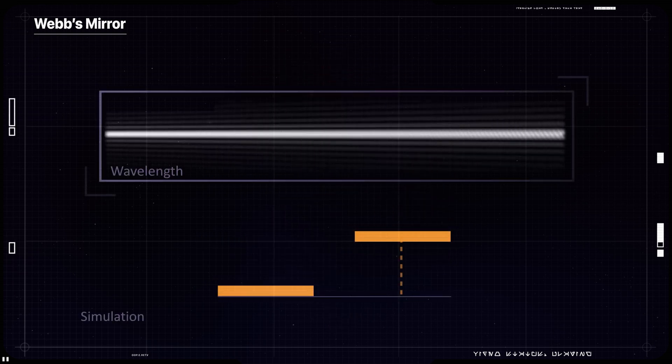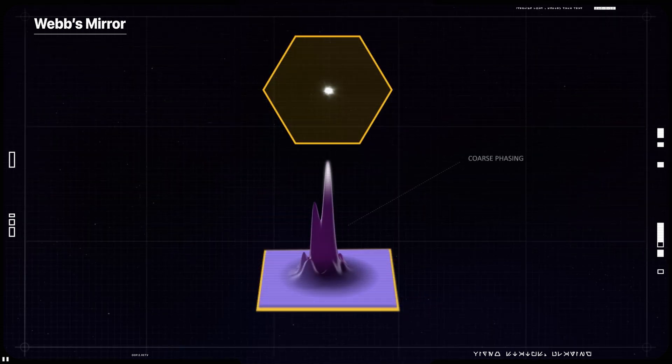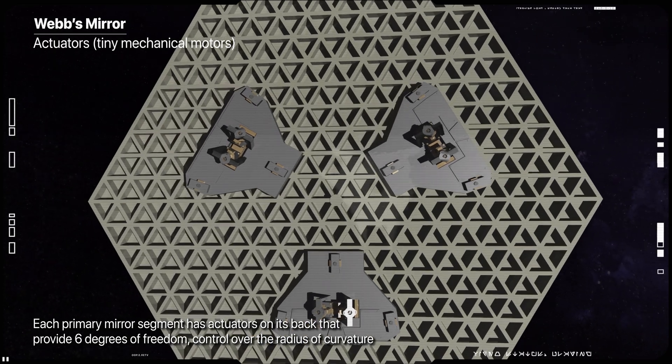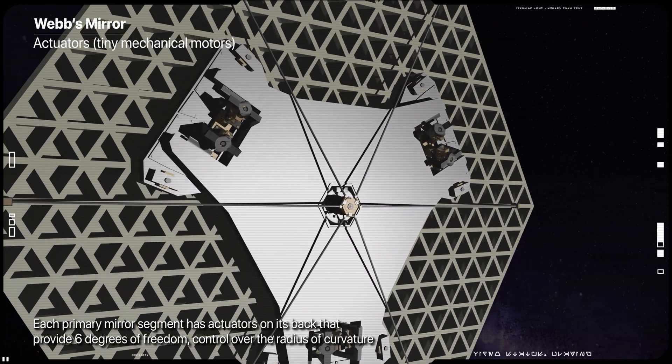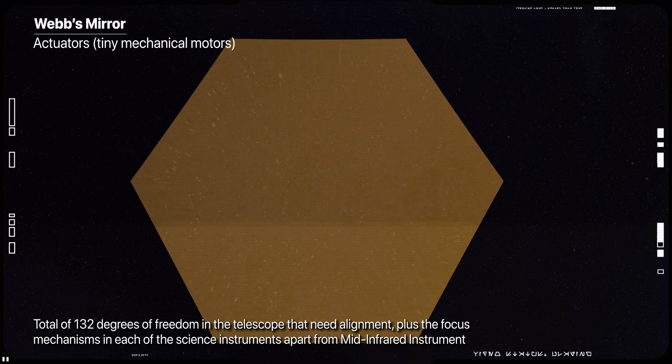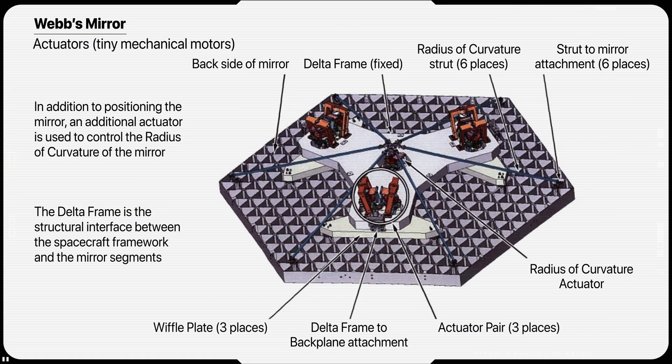When the engineers needed to adjust the positions and shapes of the mirror segments to achieve precise alignment, they used the 7 actuators or tiny mechanical motors attached to the back of each one of the mirror segments. For each segment, 6 of these actuators are placed into groups of 2 at 3 equally spaced points along the outside of the mirror to adjust the segment's position, and one is attached to 6 struts that are connected to each of the hexagonal mirror segments' corners to adjust the segment's shape.